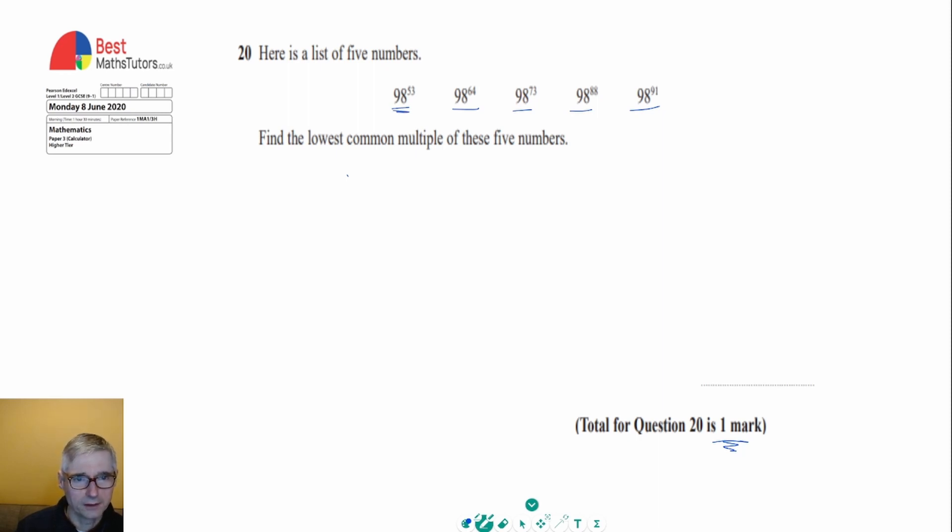Now if we look at the first one, we can see that 98 to the power 53 times 98 to the power 38 would give me 98 to the power 91, because what we do is add the powers. So 53 plus 38 gives me 91. That means there is a number I can multiply 98 to the 53 by to get 98 to the 91.